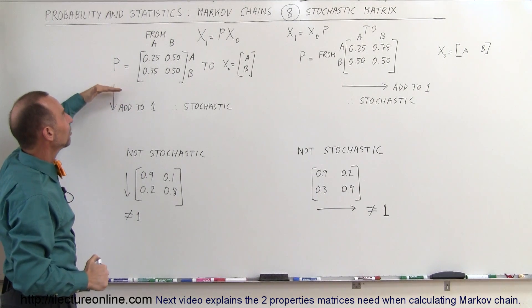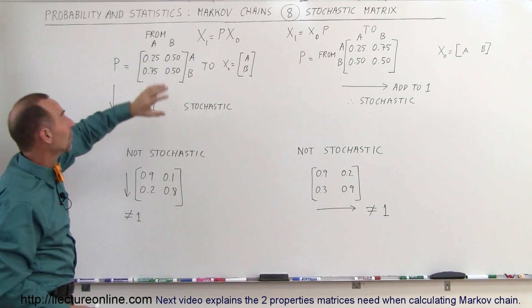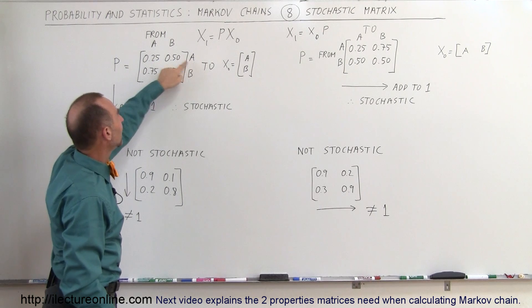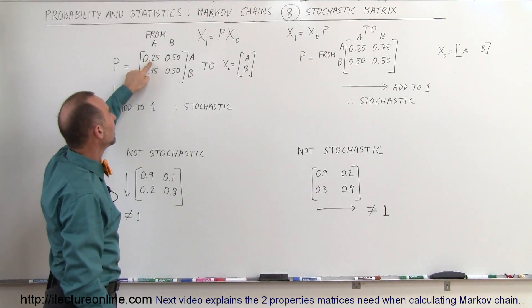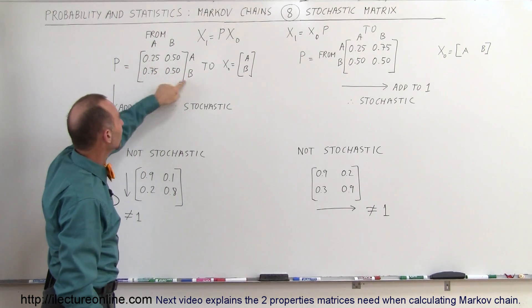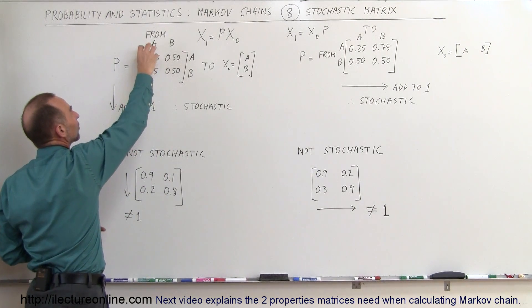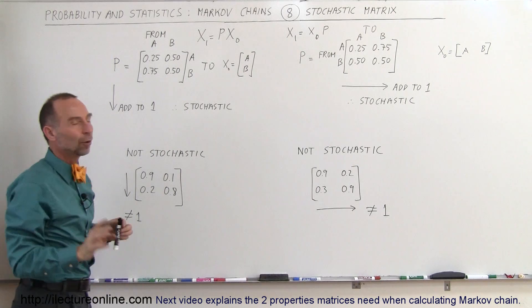But nevertheless if we're going to use this method right here we will put the from at the top and the to at the bottom. So from A to A is 0.25, from A to B is 0.75 for example. That means 25% of the items stay with A, 75% of the items go to B and so forth.